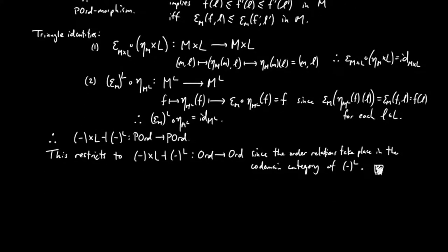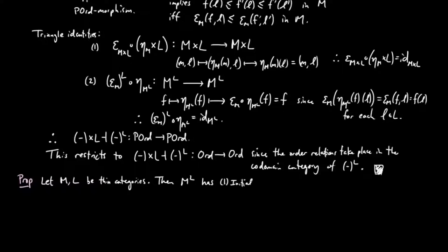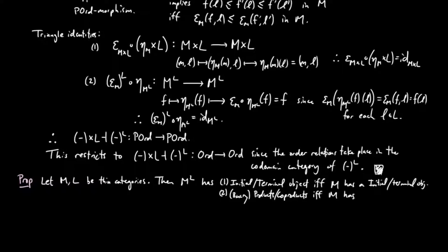We can also prove the following with regards to limits and colimits. Let M and L be thin categories. Then M^L has (1) an initial respectively terminal object if and only if M has an initial respectively terminal object, and (2) M^L has products respectively coproducts if and only if M has products respectively coproducts. In order theory, the initial and terminal objects are called bottom and top, and products and coproducts are called meets and joins.